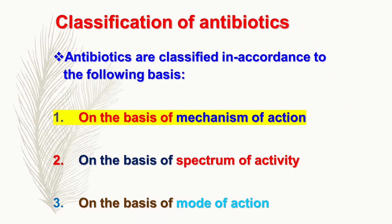Now we are looking at the classification of antibiotics. Antibiotics can be classified based on three bases: first, based on their mechanism of action; second, based on their spectrum of activity; and third, based on their mode of action. We are going to discuss in detail the classification of antibiotics on the basis of mechanism of action.